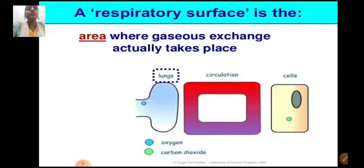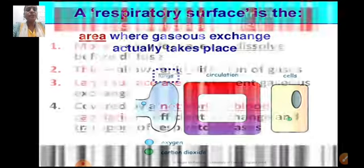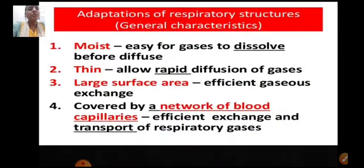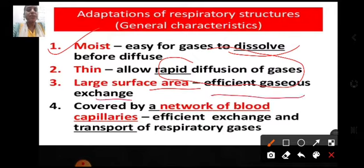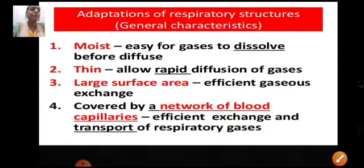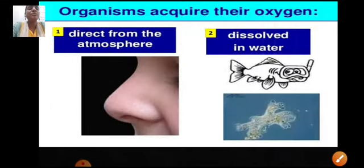The respiratory surface is the area where gaseous exchange takes place, consisting of lungs, the circulatory system, and the cells. The gases exchanged are oxygen and carbon dioxide. Adaptations of respiratory surfaces include: they are moist, so gases dissolve easily before diffusing; the membrane is very thin for rapid diffusion; they have a large surface area for efficient gas exchange; and they are covered by a network of blood capillaries for efficient transport of respiratory gases.